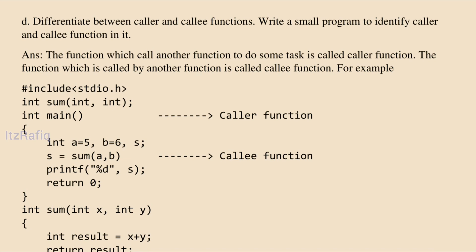Difference between caller and callee: the function which calls another function is the caller function. For example, when the main function calls another function, main is the caller. The function which is called by any other function is the callee. When main calls some function to perform a specific task, that function is the callee. Note: I forgot to write the semicolon in the callee function example, so please add it.